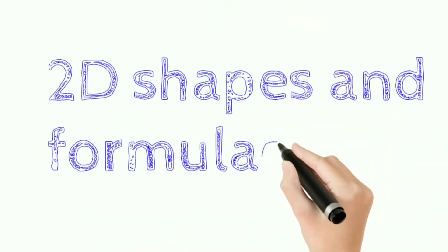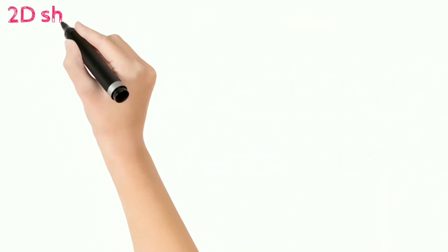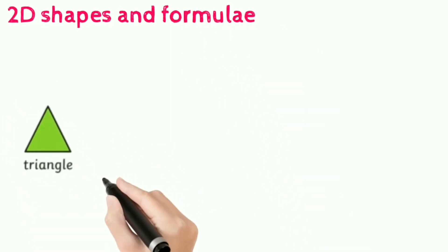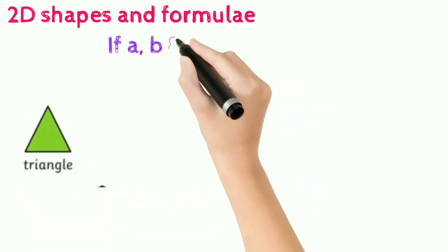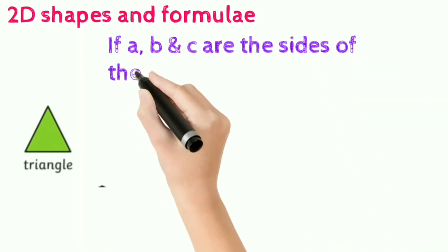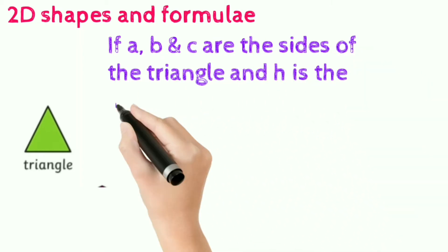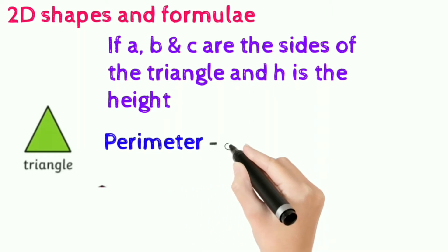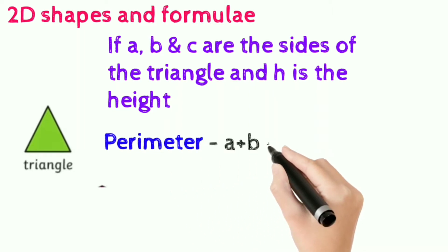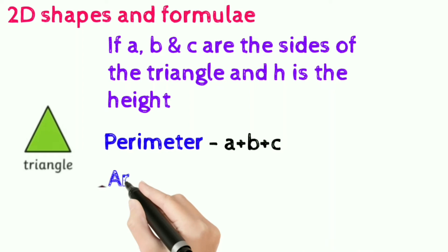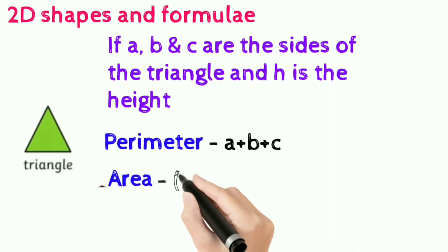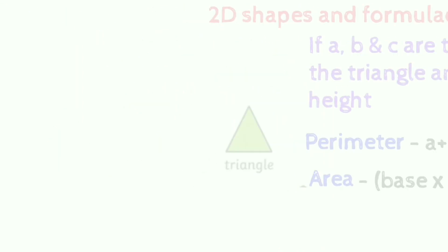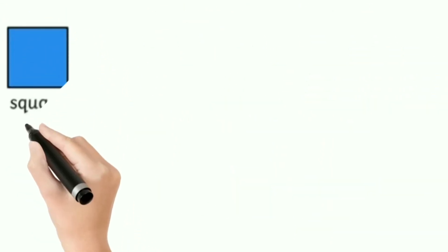2D shapes and formulae. Triangle: if a, b, and c are the sides of the triangle and h is its height, perimeter of the triangle is the sum of all sides, that is a plus b plus c, and area of the triangle is half base into height, or base into height divided by 2.